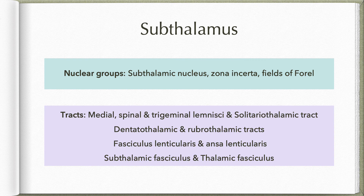There are also other fiber bundles connecting various parts of the basal ganglia, located in and around this region, to the nuclei in the thalamus. These include the fasciculus lenticularis, ansa lenticularis, subthalamic fasciculus, and thalamic fasciculus. We will learn about these in the next section.